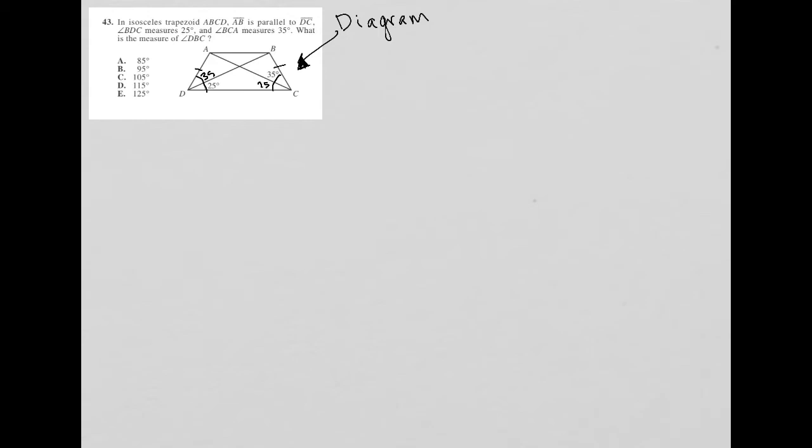AB is parallel to DC, so I'll put my little parallel symbols in. Now if they're parallel, that means that this angle here is 25 because of alternate interior angles, right? Whenever I see parallel, that's a trigger word, a signal word that I should be looking for alternate interior angles, corresponding angles, same side interior - whatever I can, any of those rules that we learned in school about parallel lines and their angles. It also means that this angle here is 25.